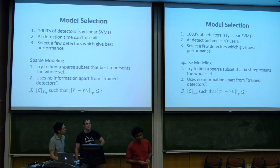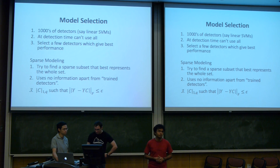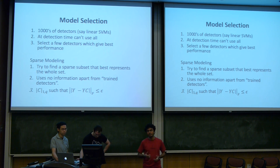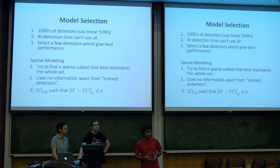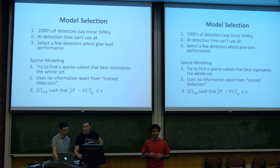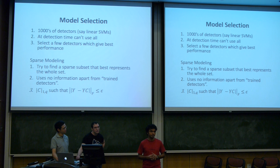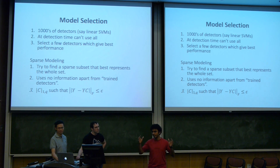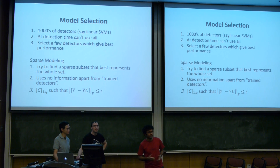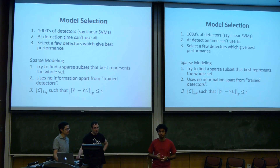For the first part, object detection is very relevant in robotics and first-person vision, like when you're using Google Glass. You have tons of objects and tons of detectors, but in a real-time detection scenario you cannot use all of these, mainly because of power, time, and memory constraints. The exact problem is model selection: given the entire superset of models, you select a smaller subset that gives reasonable performance within your given budget of time and memory.